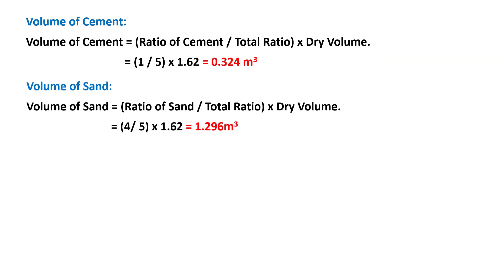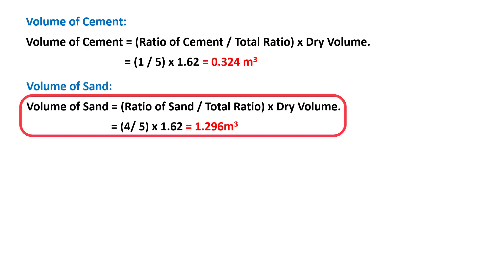To calculate the volume of sand needed, use the formula: Volume of sand = (ratio of sand / total ratio) × dry volume. The ratio of sand is 4 and the dry volume is 1.62, so the volume of sand = (4/5) × 1.62 = 1.296 cubic meters.